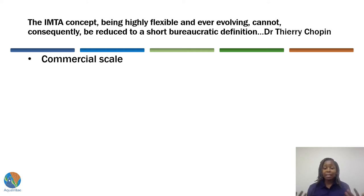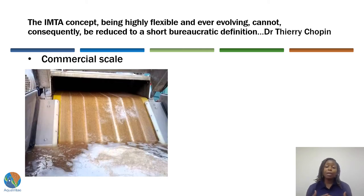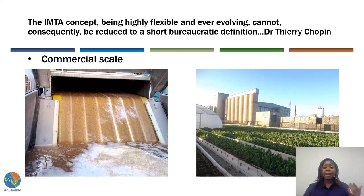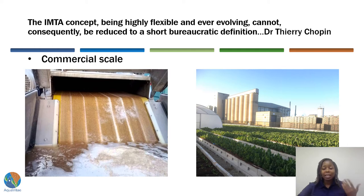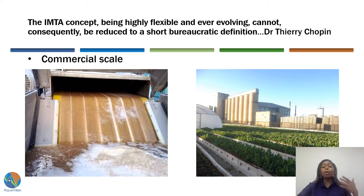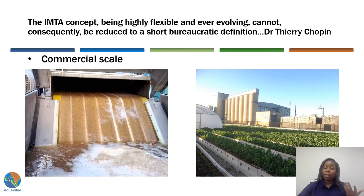The first example is a commercial-scale system currently running at South African Breweries in the Eastern Cape province. In this system, brewery wastewater is pumped onto constructed wetlands planted with crops. As the wastewater passes through, the crops take up nutrients, and the product that comes out is cleaner water which can then be used for other purposes such as aquaculture. At the back there is a tunnel with fish tanks, and treated wastewater from the constructed wetland is pumped into those tanks where fish are grown. So it is a non-conventional, but valid, form of IMTA.